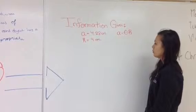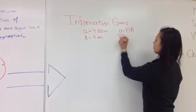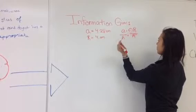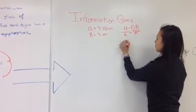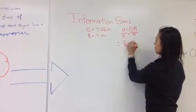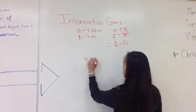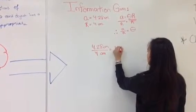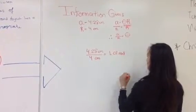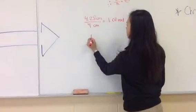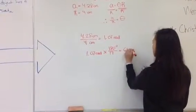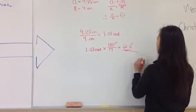We must first solve for theta. To do this, divide both sides of the arc length equation by r, giving us A over r equals theta. Plugging in the values, 4.28 cm over 4 cm equals theta, so theta equals 1.07 radians. Since the answer asks for degrees, we convert: 1.07 radians times 180 degrees over pi equals 61.3 degrees. This is our final answer.